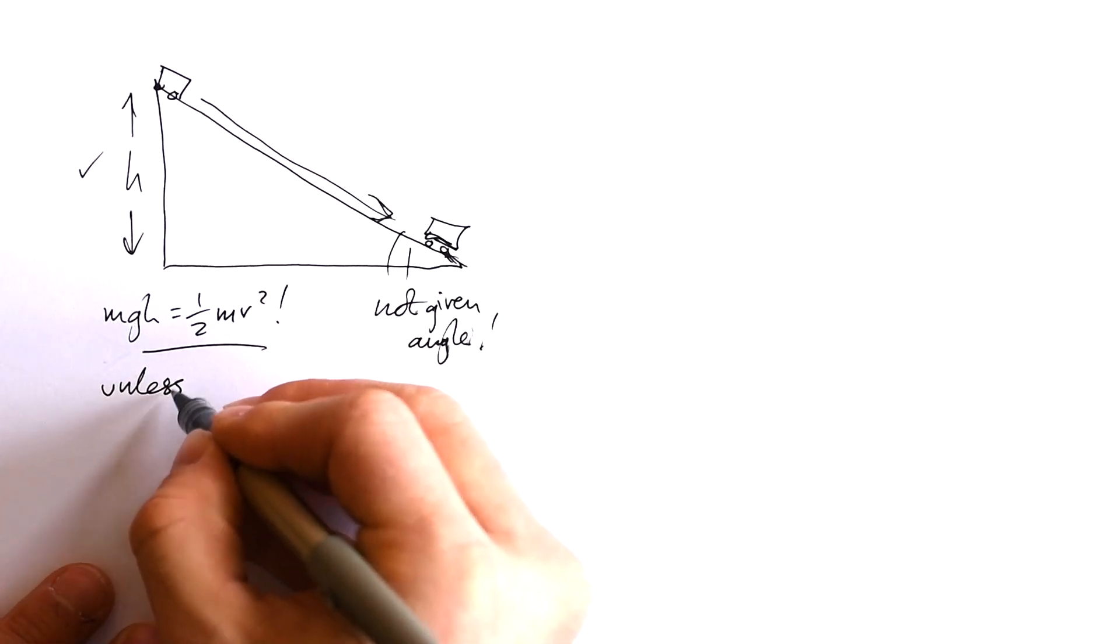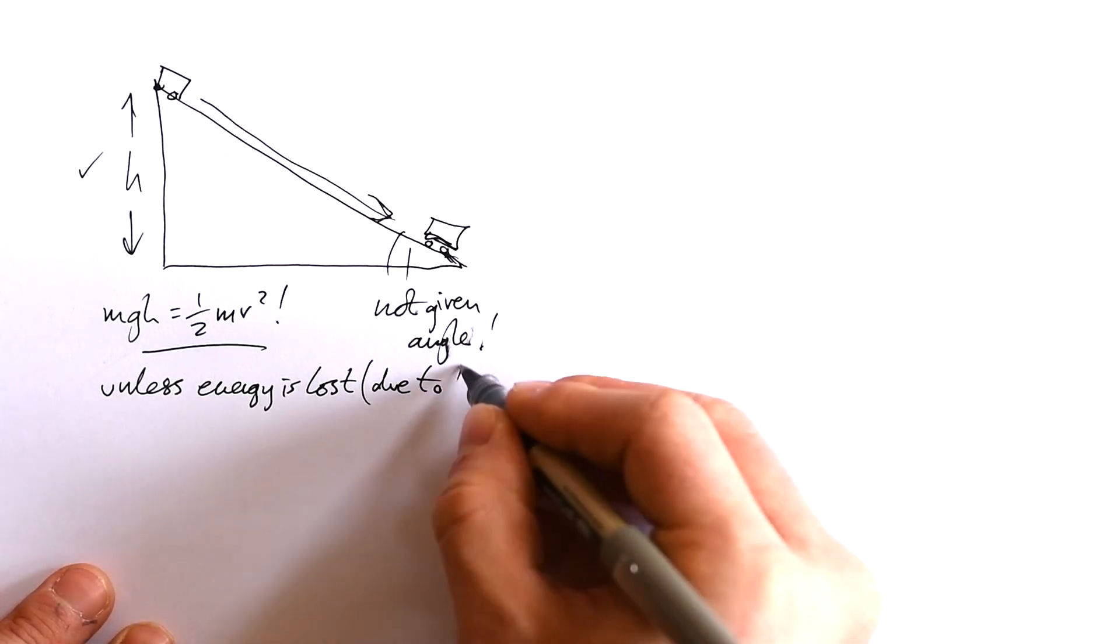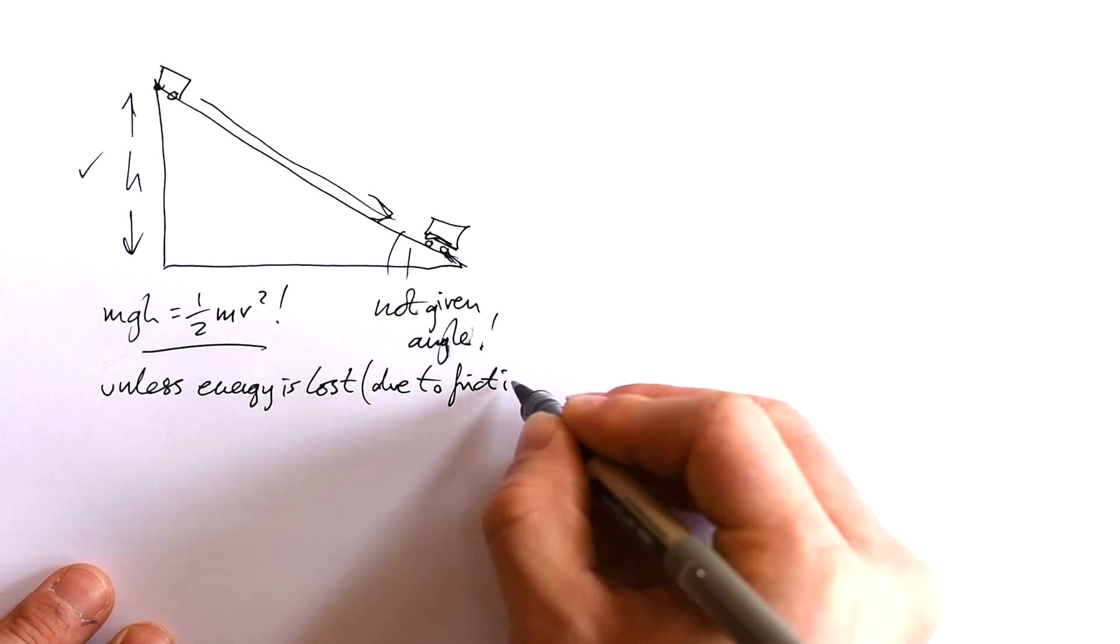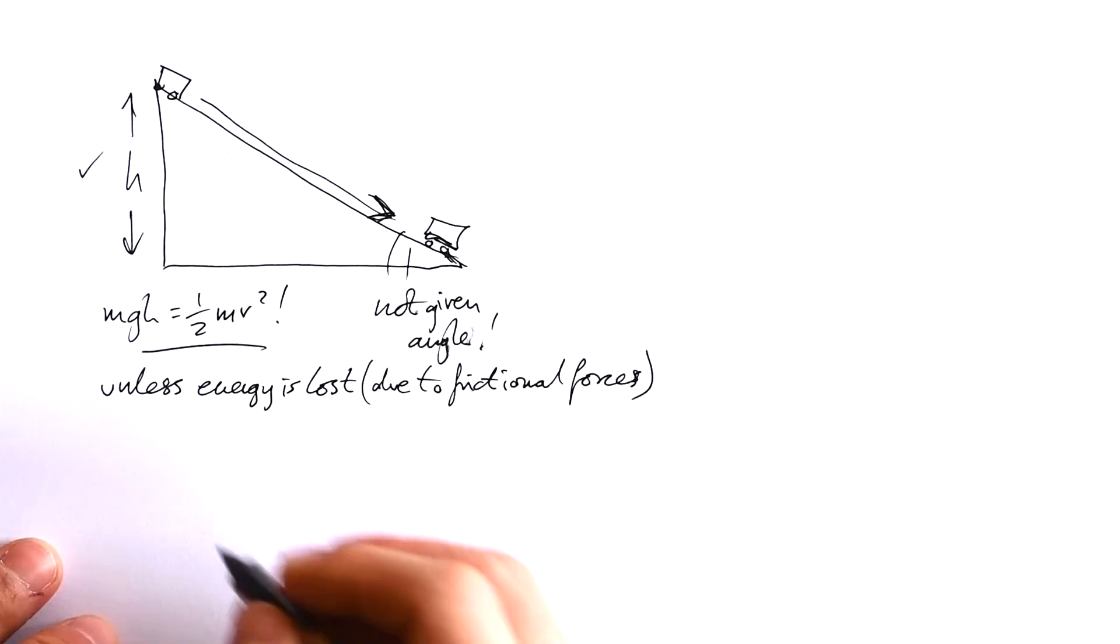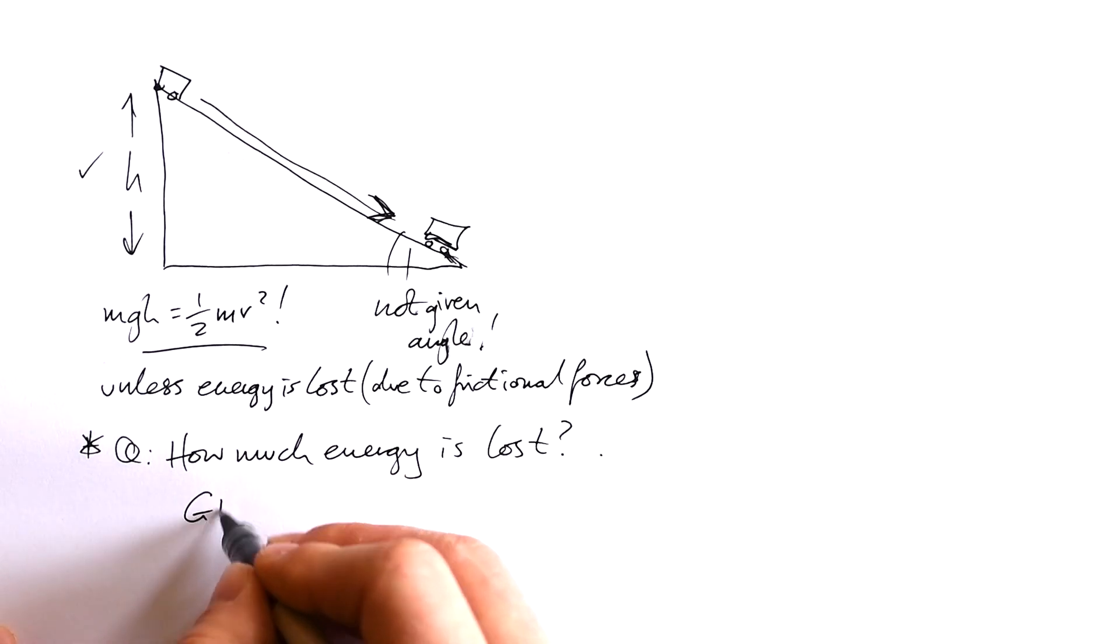But there is a possibility that energy is lost, and that's usually due to friction. Yeah, it can be air resistance as well, but let's say frictional forces. So you could get asked, how much energy is lost? So of course, this is going to be equal to GPE take away the kinetic energy at the bottom.